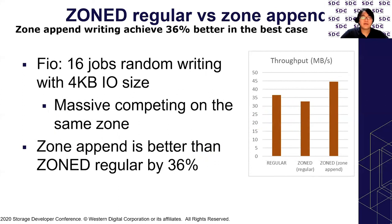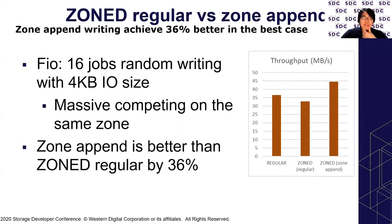This is the final benchmark. To confirm the benefit of zone append writing, I ran an extreme locking stress case: 16 random writing jobs with 4 KB IO size, massively competing on the same zone. Throughput results show zone append writing is better than zone-regular by 36%. And for some reason, it is even better than the regular case. So removing the zone locks is quite useful for such heavy, small IO cases.